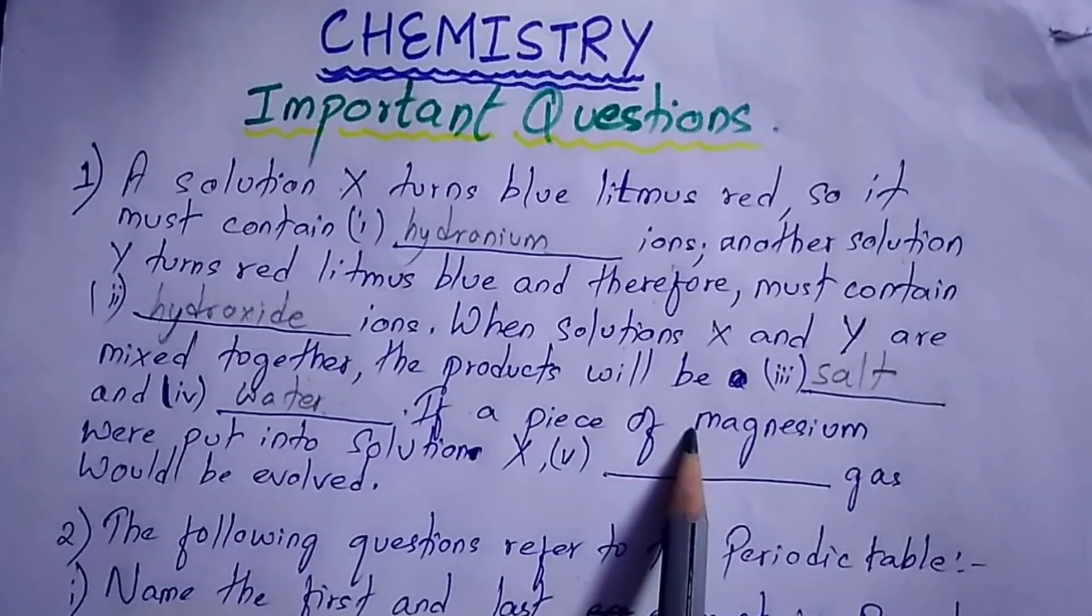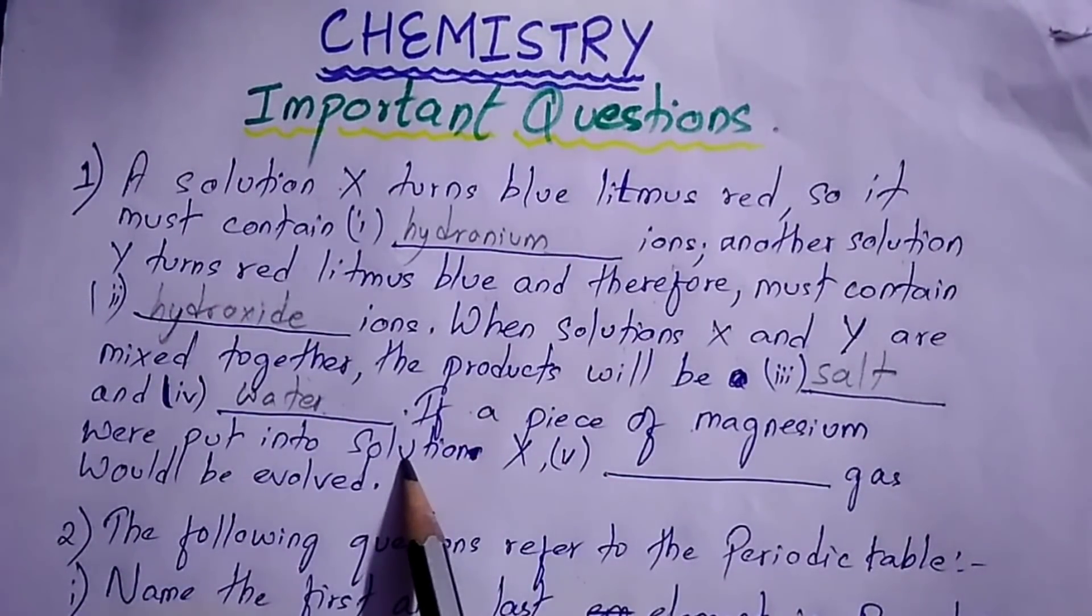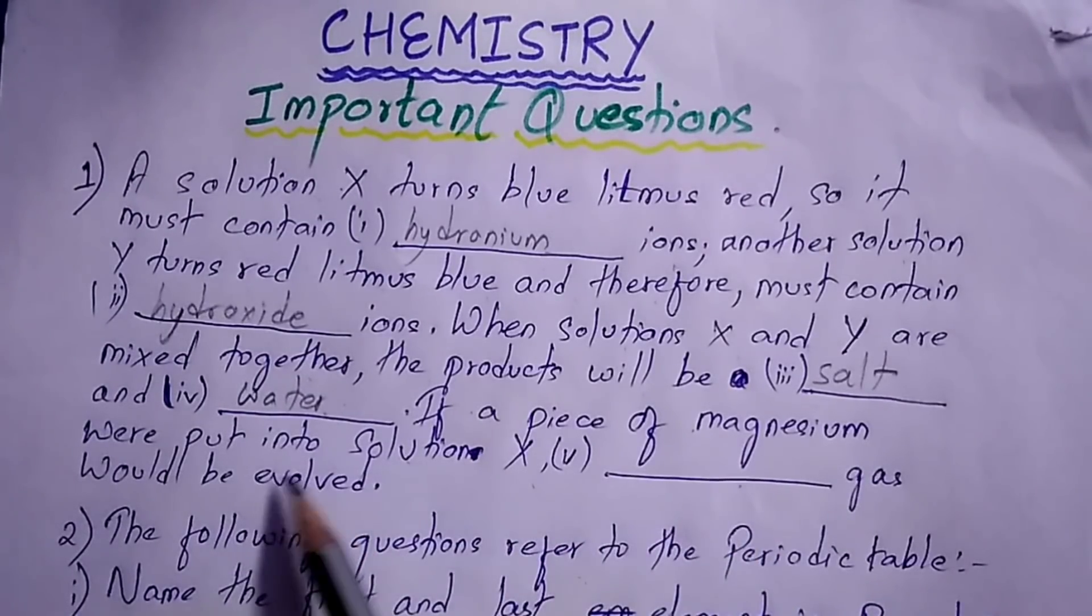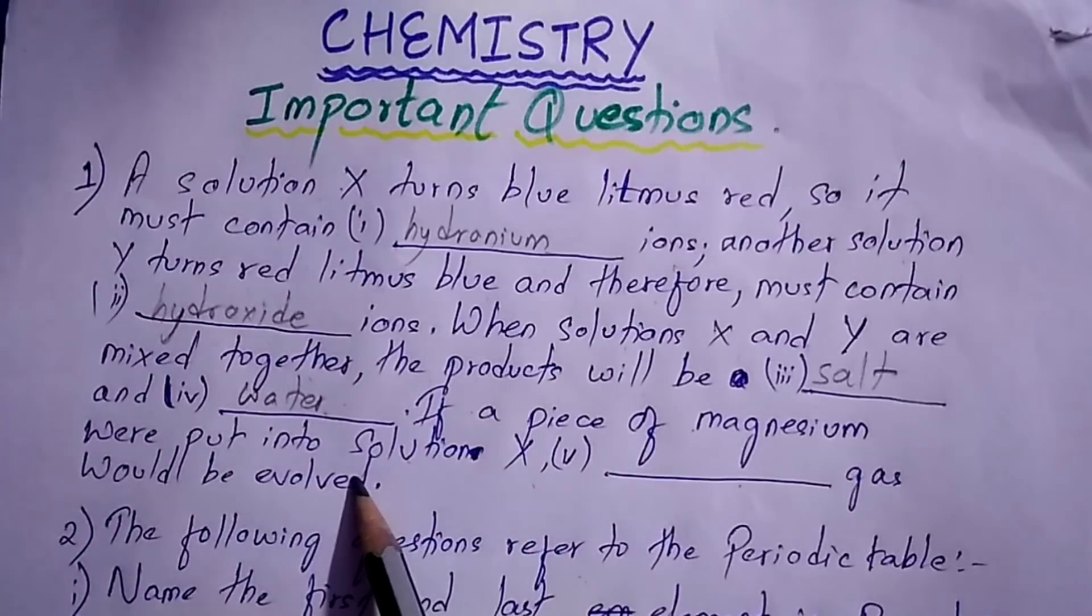If a piece of magnesium were put into solution X, then hydrogen gas would be evolved.